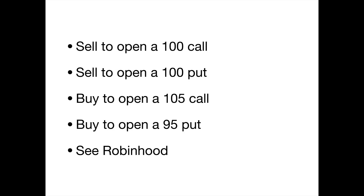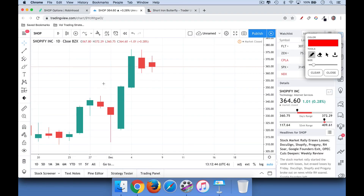This will make a lot more sense with an example. Let's say the stock is trading right at $100. We'll sell to open a 100 call and sell to open a 100 put — those are both at the money, so this is basically shorting an at the money straddle. Then we buy the wings: we'll buy the 105 call in case the stock goes up a lot, and buy the 95 put in case the stock goes down a lot. That's basically how you short an iron butterfly.